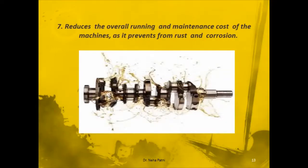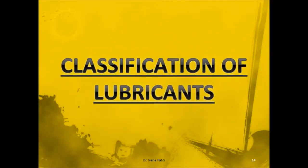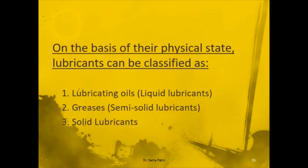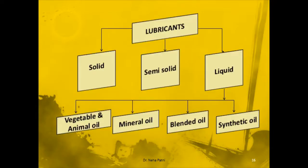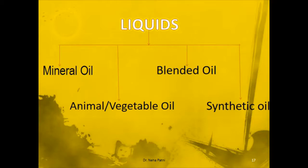Overall, by performing all these roles, lubricants help in reducing the overall running and maintenance cost of the machine. Now let us see how many types of lubricants there are. We divide them on the basis of their physical state — how they look. They could be liquid, semi-solid, or solid. As you can see in this chart, lubricants are divided into three types: solid, semi-solid, and liquid. Liquid is further classified into four types, which we will discuss one by one.